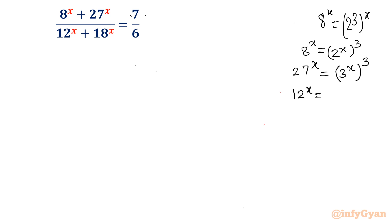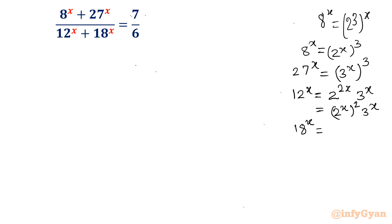Now for 12 power x: 12 is 4 times 3, and 4 is 2 squared, so it can be written as 2 raised to the power 2x, or 2 raised to the power x, whole square, times 3 raised to the power x. And 18 power x: 18 is 9 times 2, so I will write 2 raised to the power x and 9 as 3 squared, giving 3 power x whole square.